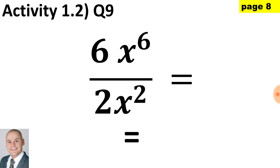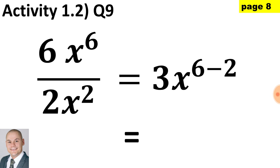In question 9, we have a fraction. We would divide the coefficients of 6 and 2, which when simplified gives us 3. When dividing bases that are the same we would subtract the exponents. Therefore, with the base x, 6 subtract 2 gives a final answer of 3 multiplied by x to the 4.